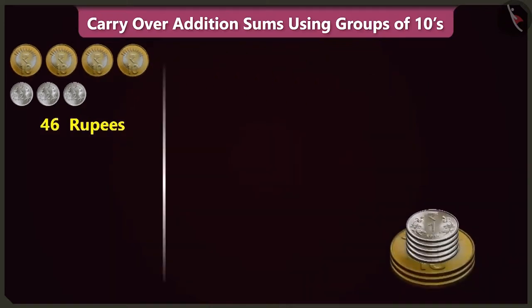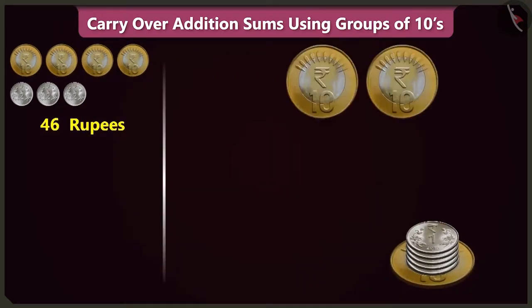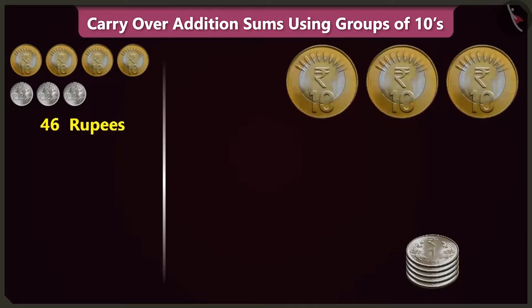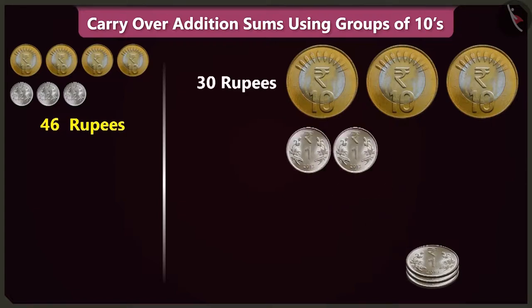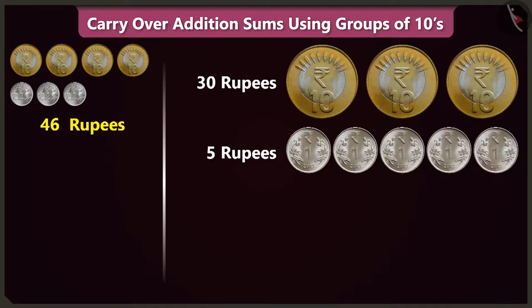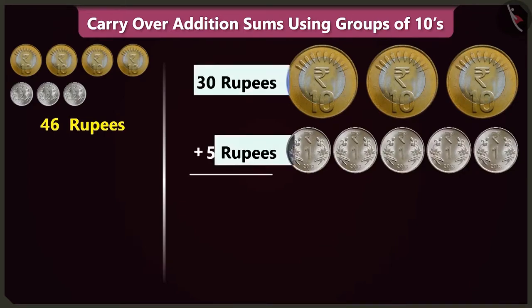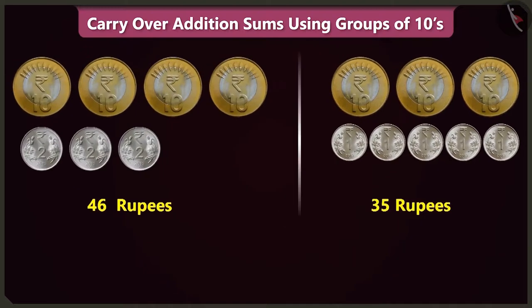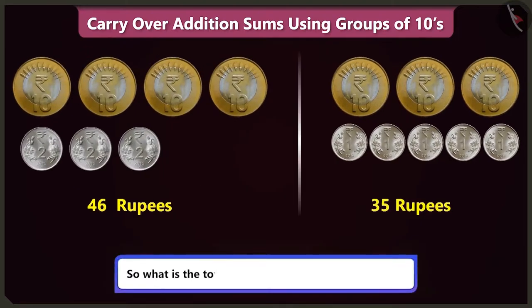In this pile of coins, there are 1, 2 and 3 coins of 10 rupees, which is 30 rupees. And 1, 2, 3, 4 and 5 1 rupee coins. So there are 30 and 5, 35 rupees. So what is the total amount in both the piles of coins?